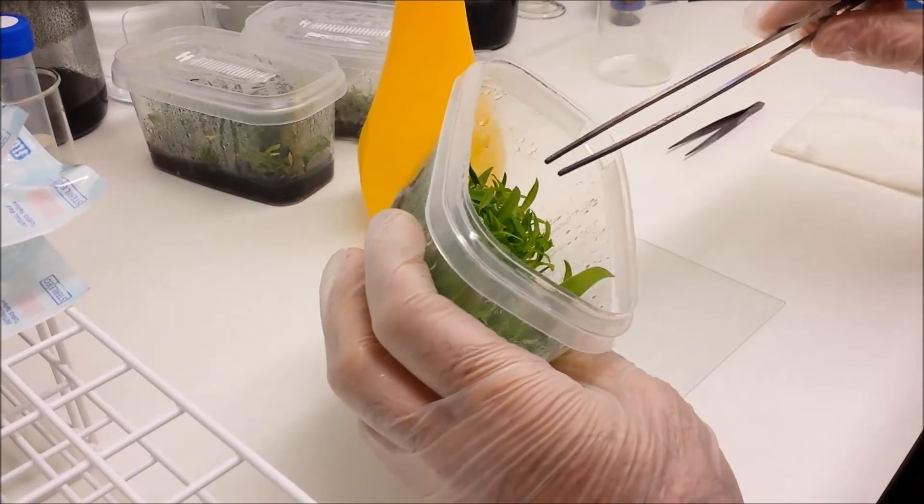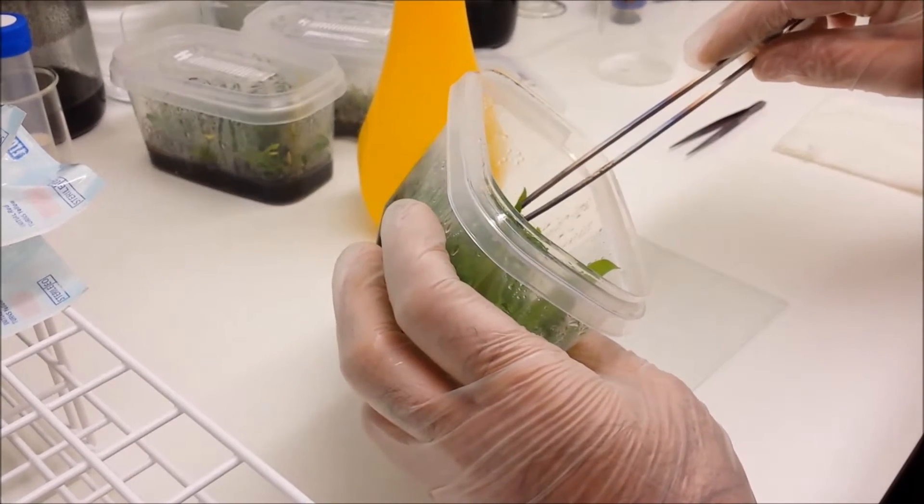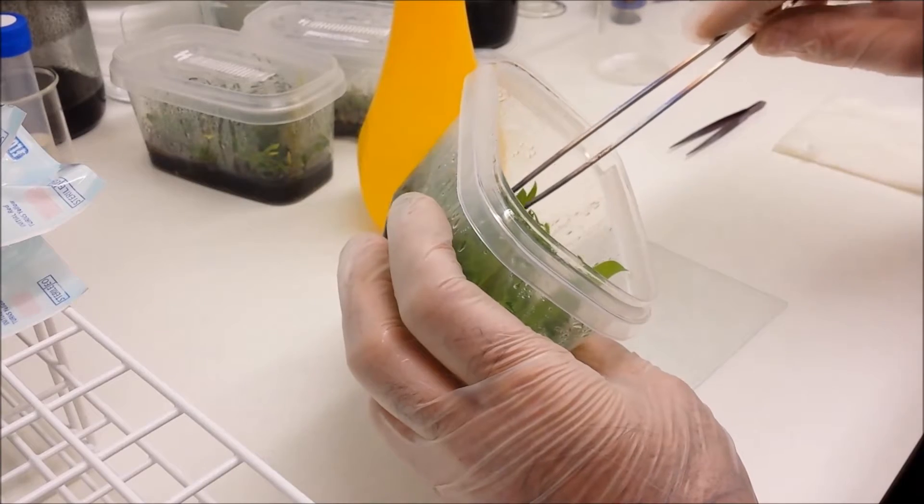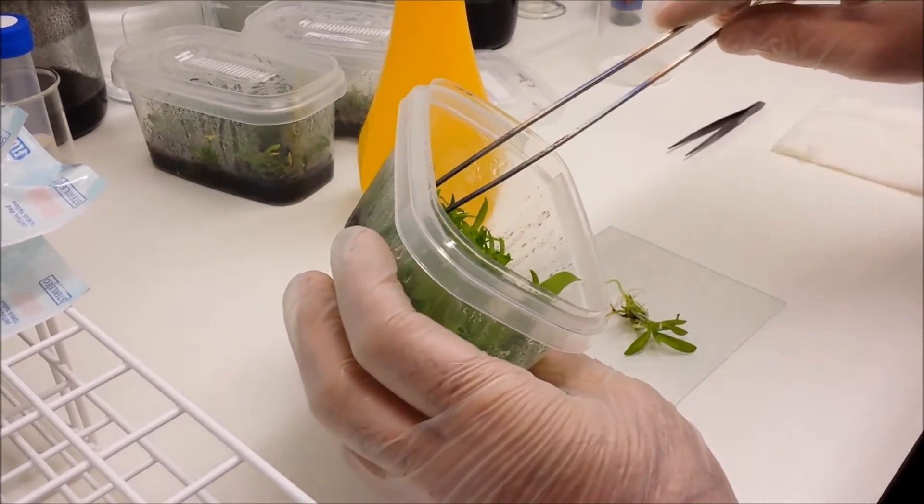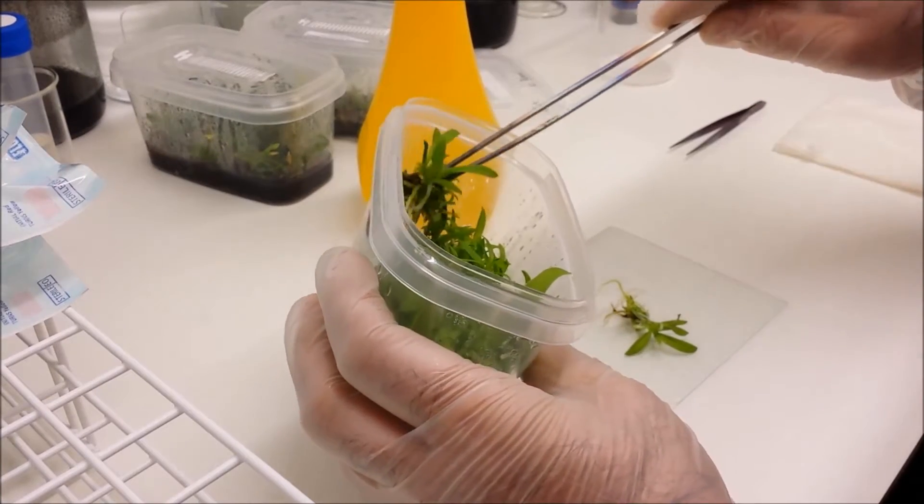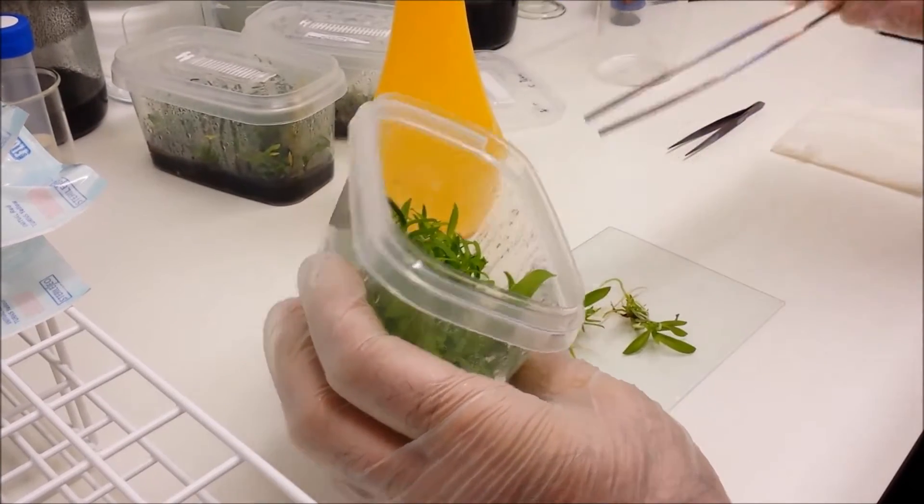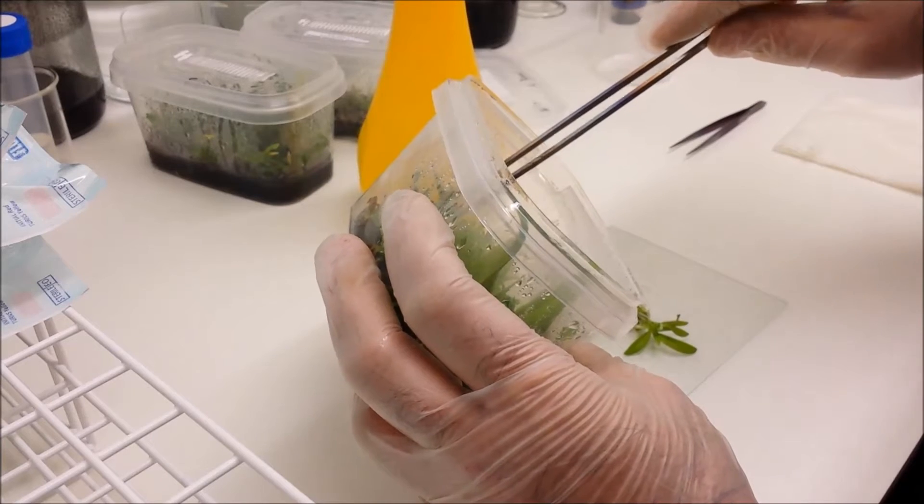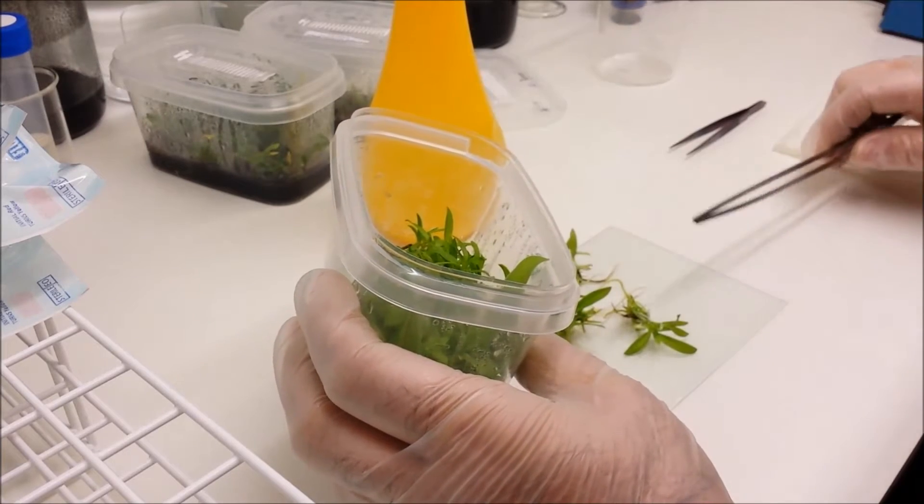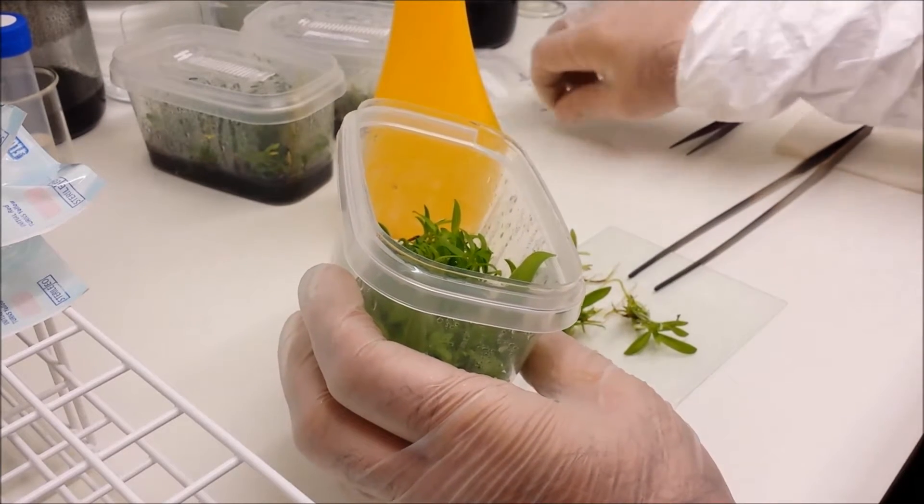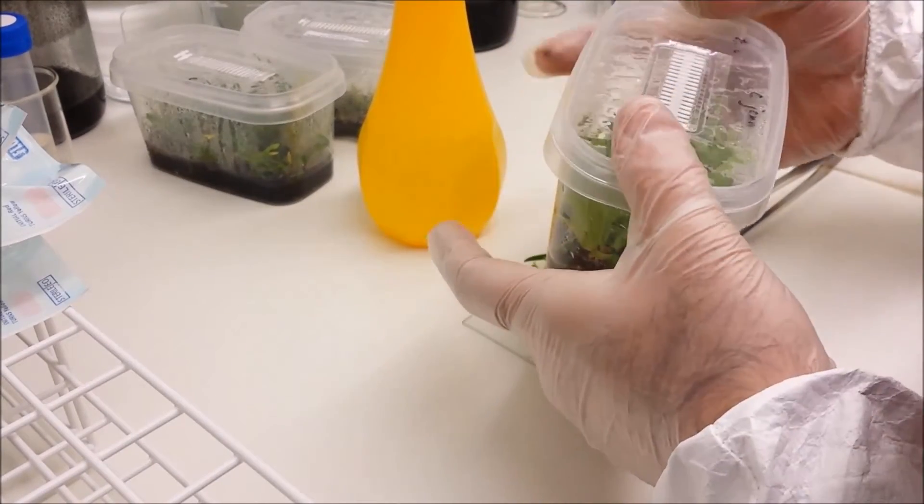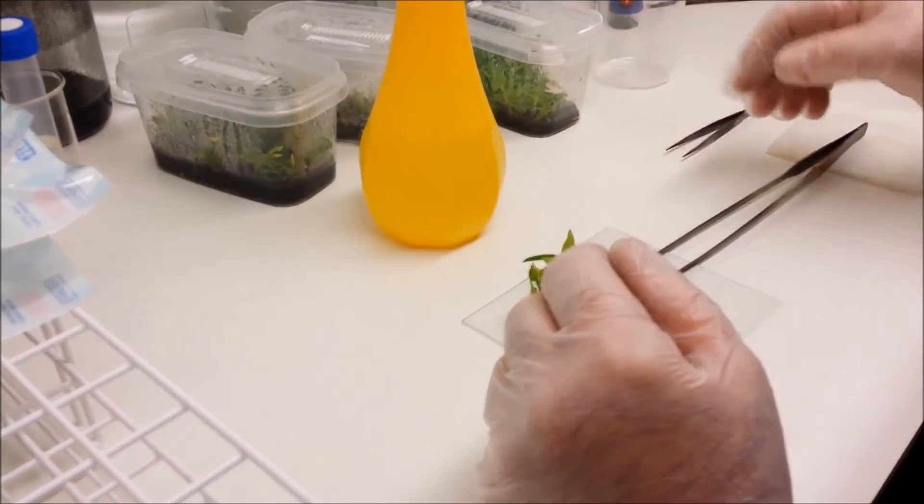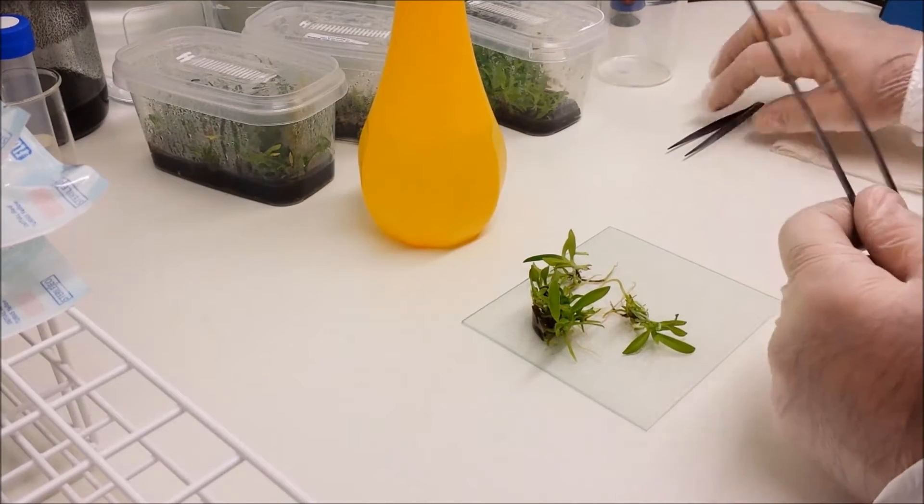Now using the long tweezers or forceps, I'm going to remove some clumps of plants. I'll try and get individuals if I can, but usually when they're this crowded in the pot, they tend to be tangled. So you might end up getting a few clumps out at a time. Put the tweezers back down on the sterile surface and replace the lid. It's most important. We can come back to those later.